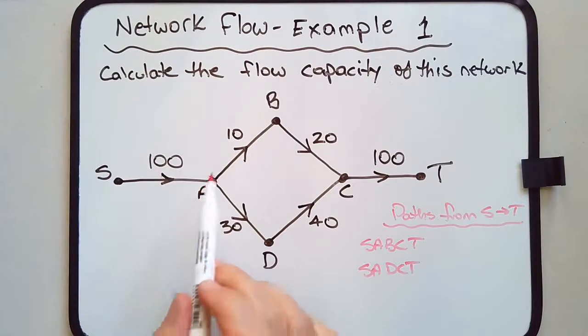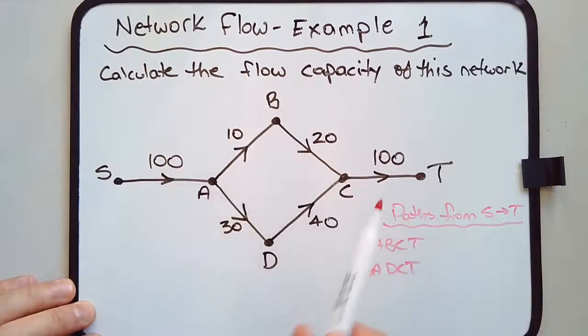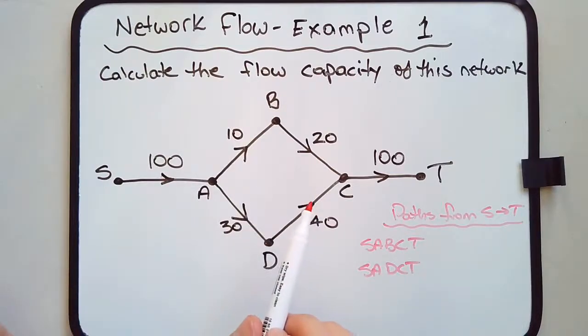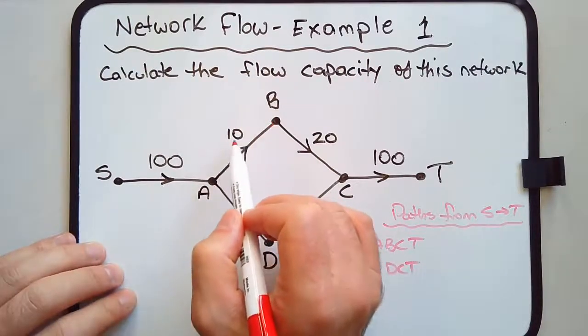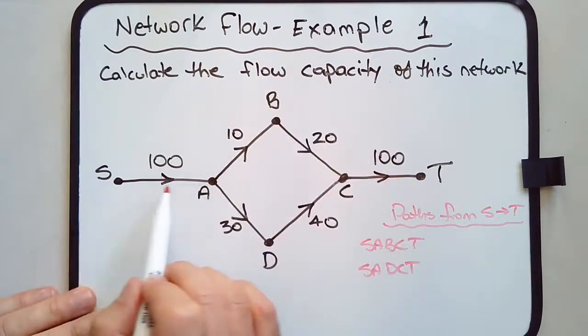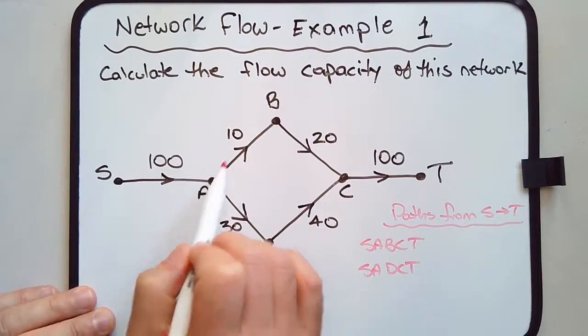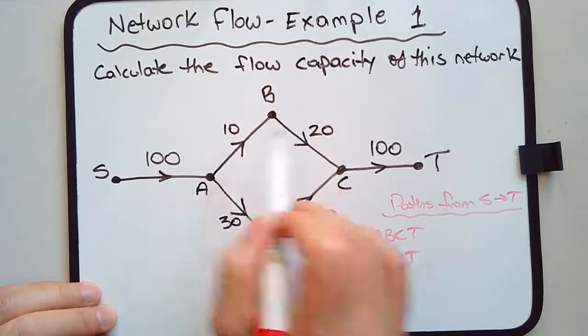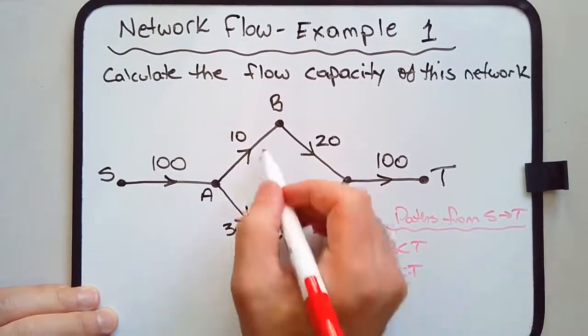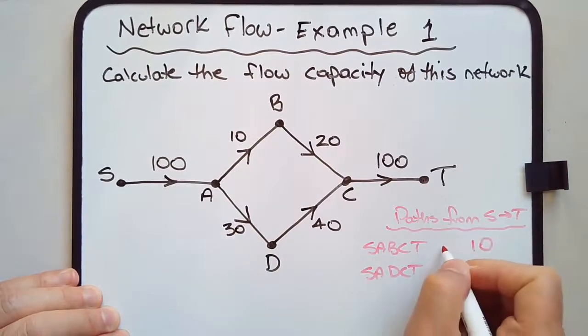We're going to calculate the capacity of each of these paths, then add those together to give us the total flow capacity. Along this path, we look for the smallest number because that's the restriction. The most restrictive edge is edge AB. Once you put 10 litres through S into A and then divert that to B, you've saturated this entire edge. So that's going to be 10.